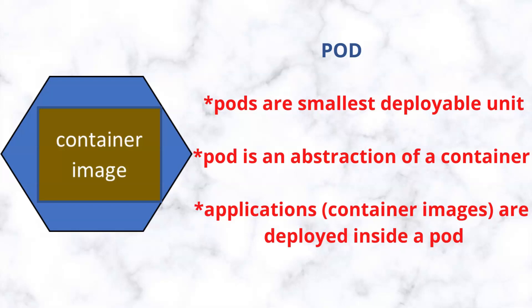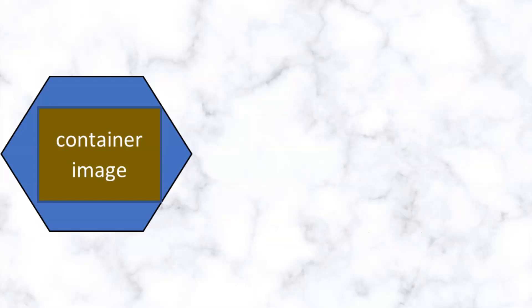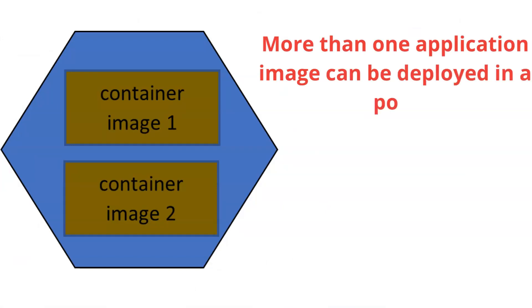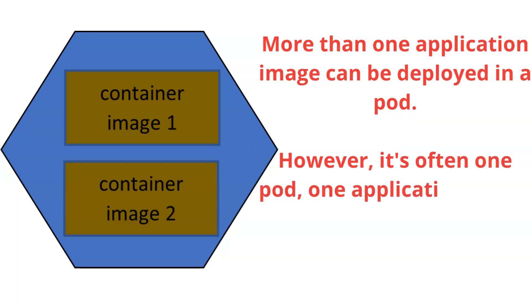Because the pod is just an abstraction over the container, and the pod is where your applications will be running — your containerized applications will be running inside the pod. You should also know that you can have more than one container image in a pod: two or three container images in a pod. Usually it's one pod, one container image, but in some cases depending on your deployment, you may choose to have more than one container running in a pod.